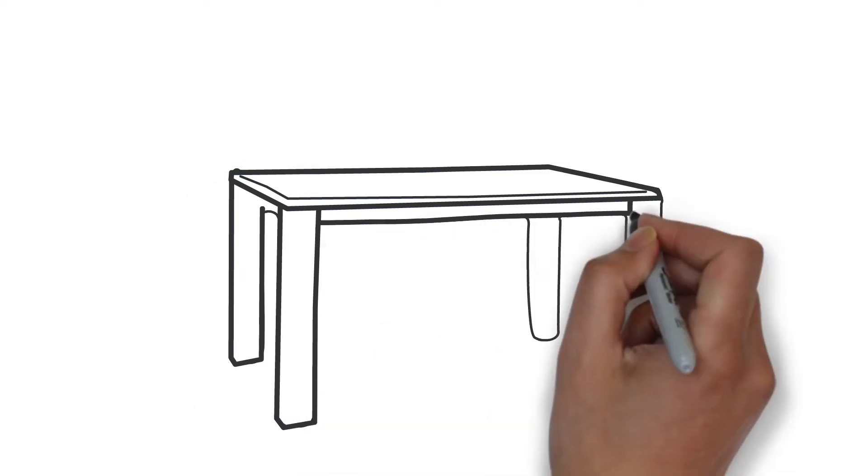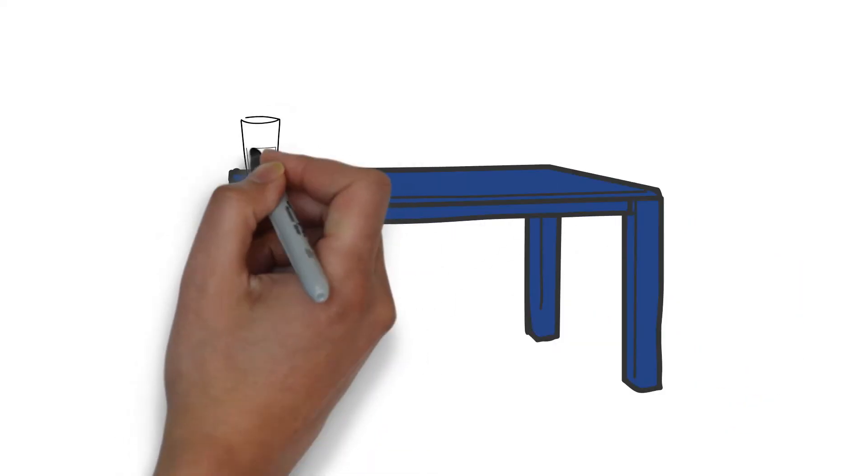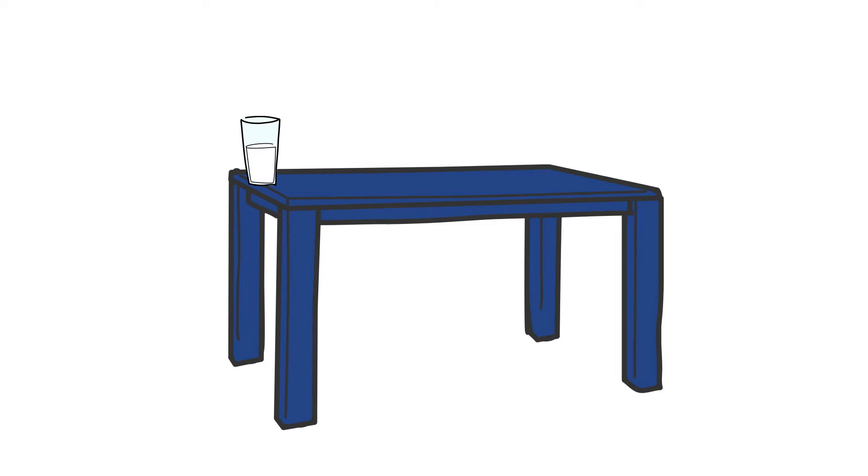I asked myself, if I saw a glass perched too close to the edge of the table, would I move it to safety? Or just leave it there and wait for the inevitable to happen?